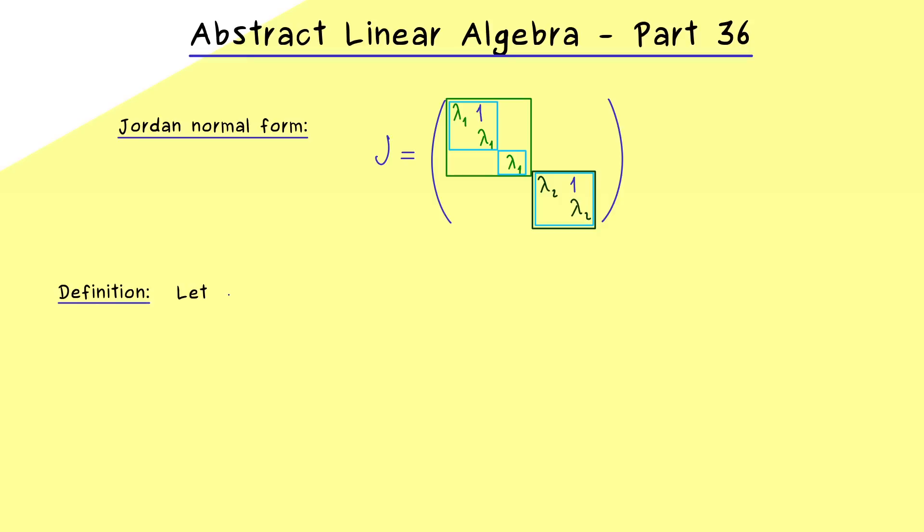Because if the ordinary eigenspaces are large enough, this matrix A here would be diagonalizable. And then the Jordan normal form is just a diagonal matrix and for that we already have the whole theory. Therefore now everything is about an extension.